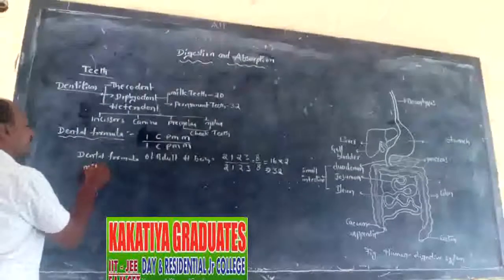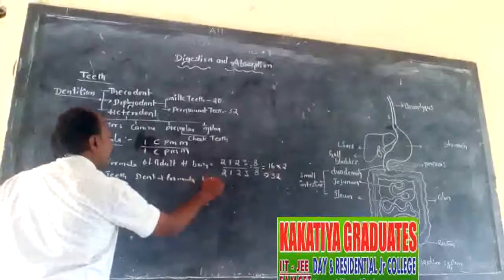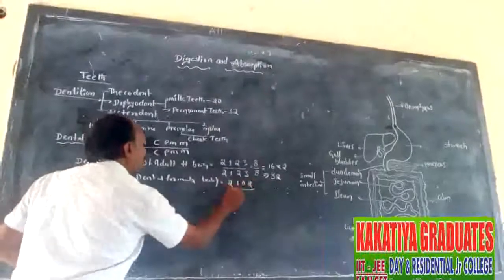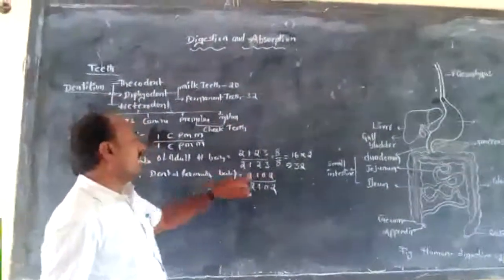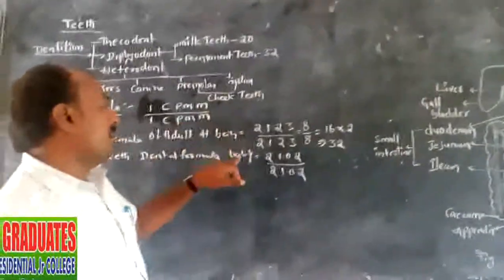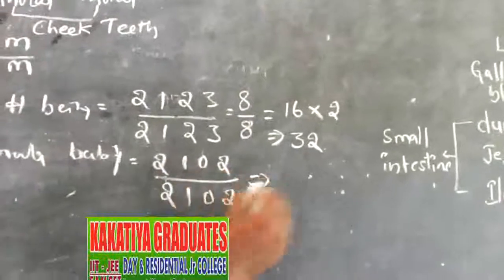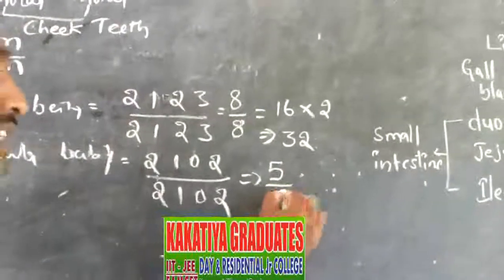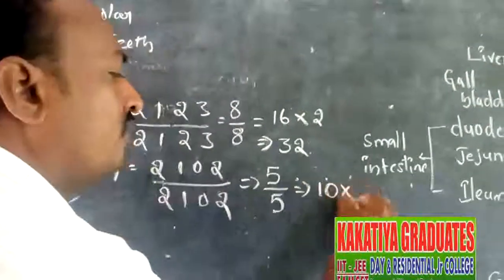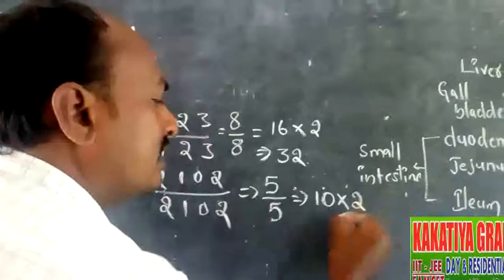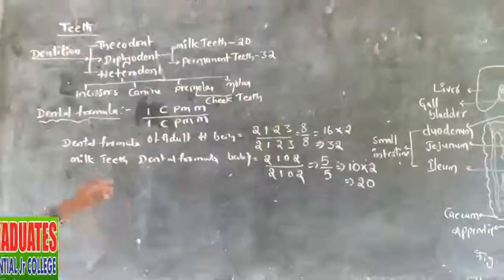The dental formula for milk teeth in a baby is 2-1-0-2 over 2-1-0-2. Premolars are absent in the baby, and the last molar teeth are also absent. The milk teeth dentition is 2-1-0-2 over 2-1-0-2. That gives 2 plus 1 plus 0 plus 2 equals 5. Half of the upper jaw has 5 teeth and half of the lower jaw has 5 teeth, giving 10. Another half also has 10, so completely 20 in number.